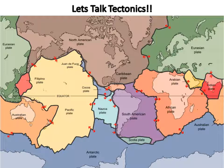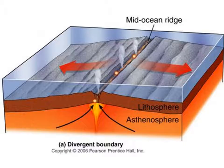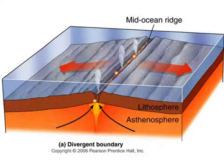The plates may converge, forming a convergent margin; diverge, forming a divergent margin; or slide past one another, forming a transform plate boundary. Divergent margins happen when tectonic plates move away or diverge from one another. When plates move away from one another, the mantle is exposed and magma will spill out onto the surface of the Earth as lava, which cools and makes new crust.